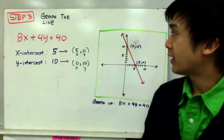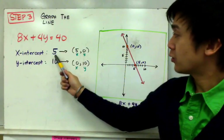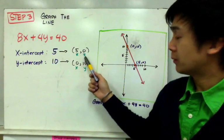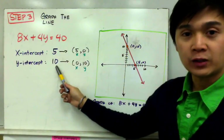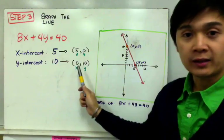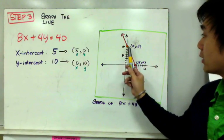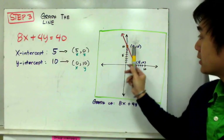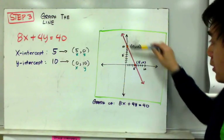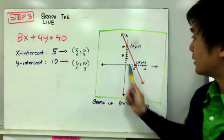Step 3 is graphing the equation using the intercepts from steps 1 and 2. The x-intercept is 5, so the point is (5, 0) along the x-axis. The y-intercept is 10, giving us the point (0, 10) on the positive y-axis. Connecting these two points creates the line, which is the graph of 8x plus 4y equal to 40.